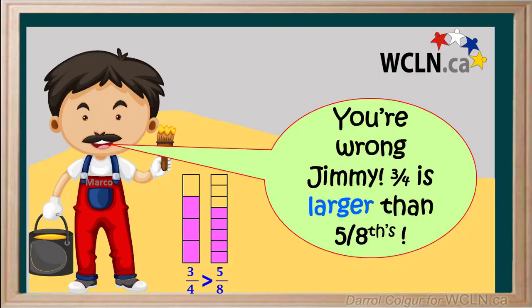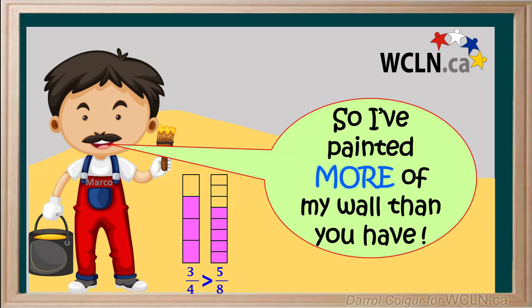Marco has painted three-quarters of his wall, and as he points out, three-quarters is larger than five-eighths. So Marco has painted more of his wall than Jimmy has.